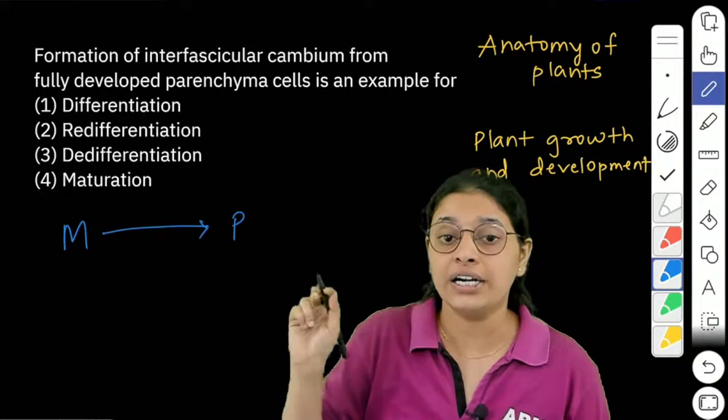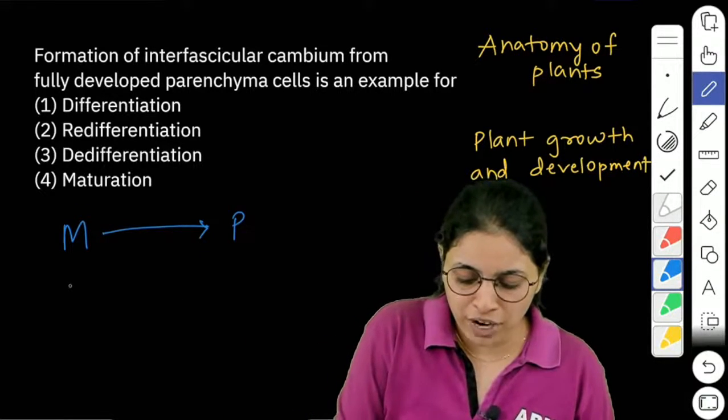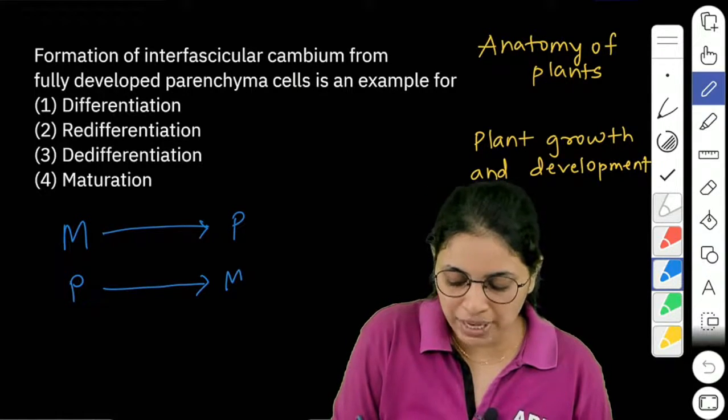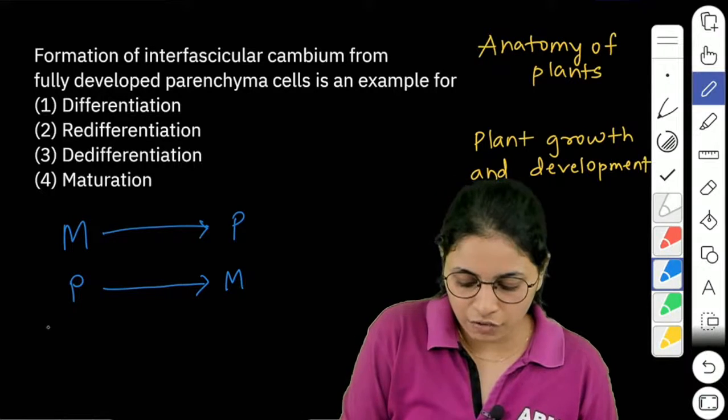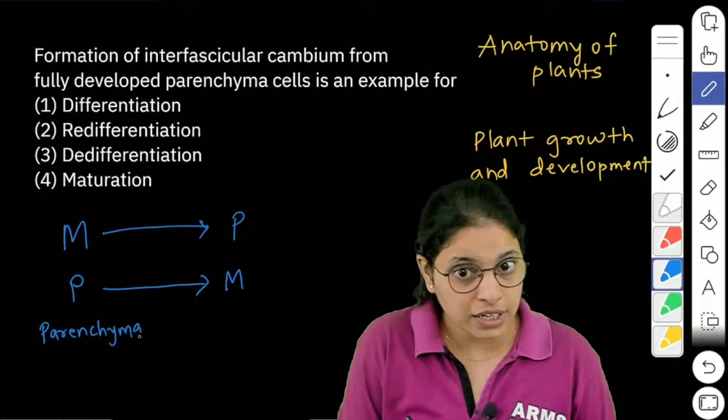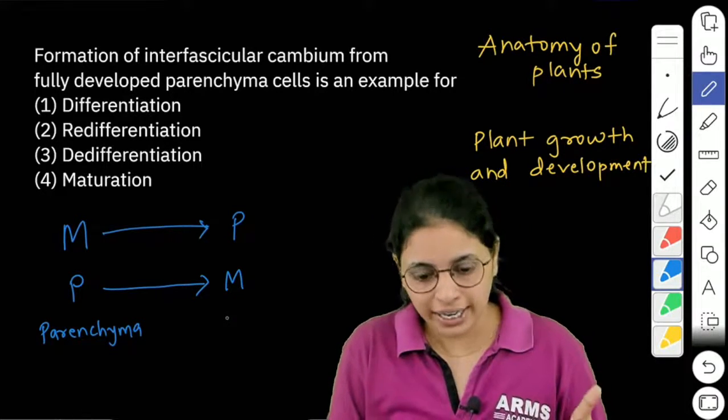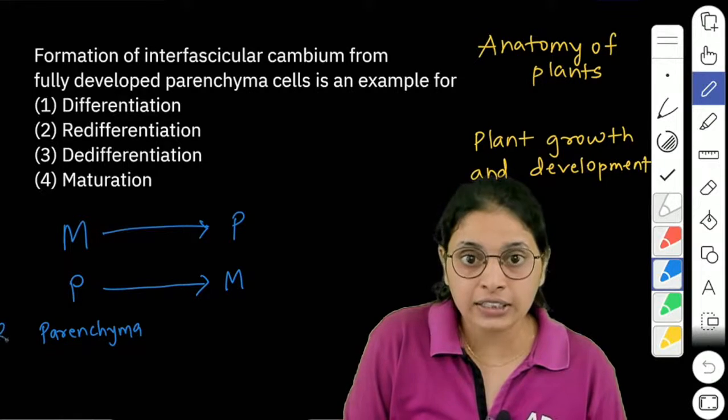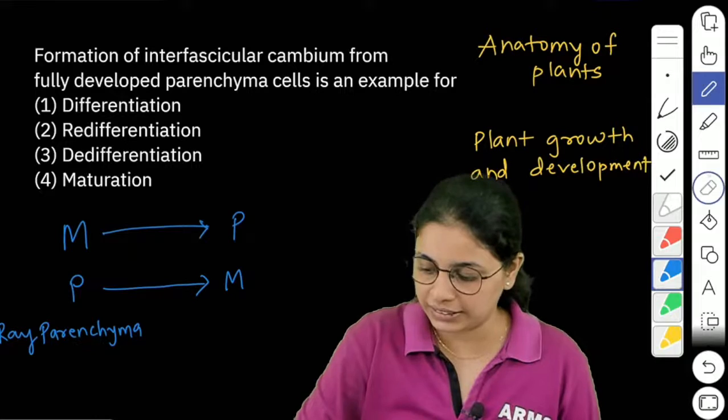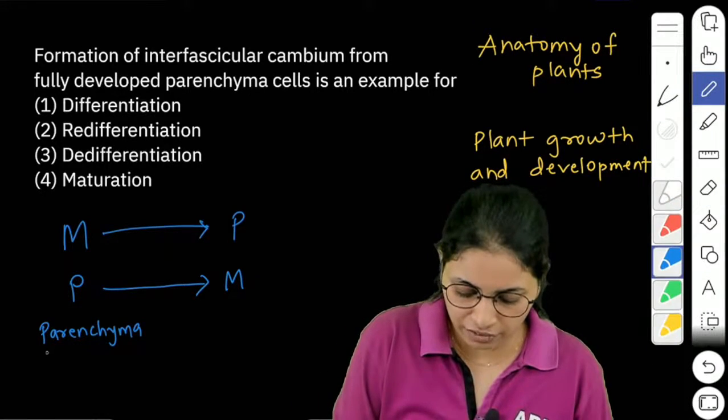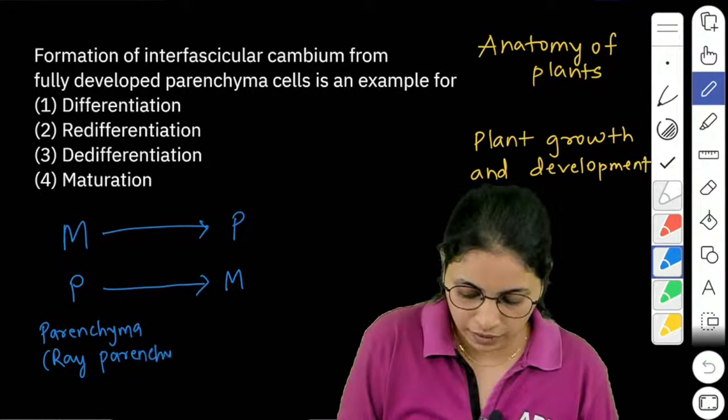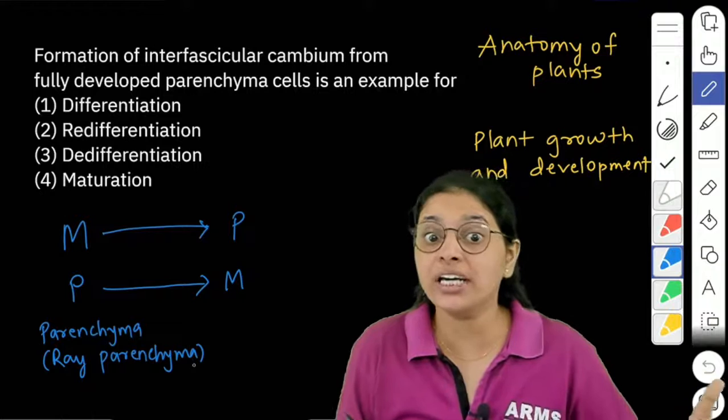If you have a permanent cell which becomes meristematic, like for example a parenchyma which is permanent again forms meristematic, like we have specifically the ray parenchyma, konsa parenchyma hai? Ray parenchyma, or you also call it medullary rays.